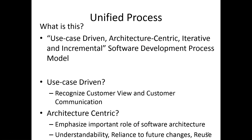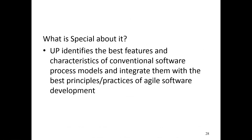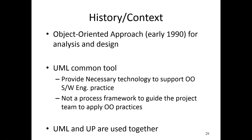Now we are going to discuss the Unified Process (UP). It is a use-case driven, architecture-centric, iterative and incremental software development process model. Use-case driven means use cases are drawn to show the functionality of the system and what the user needs — you can identify the customer's view of how users interact. Architecture-centric emphasizes the important role of software architecture — understanding future changes and how to reuse components. The special feature of UP is that it identifies the best features from conventional software process models, integrates them, and uses the best principles and practices of agile software development.